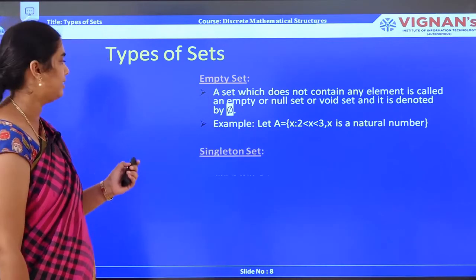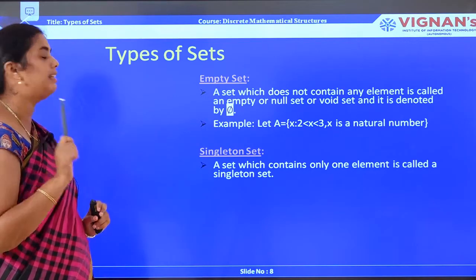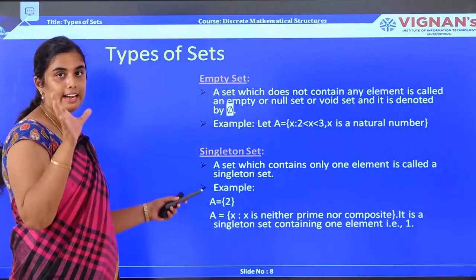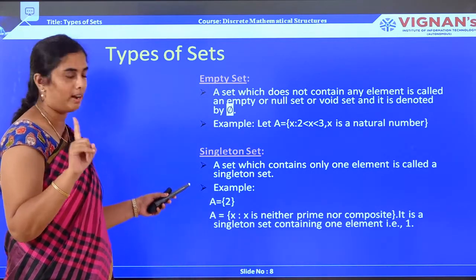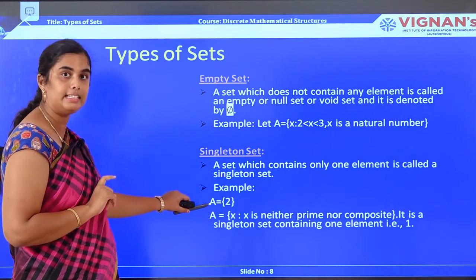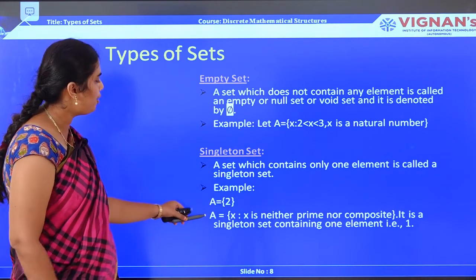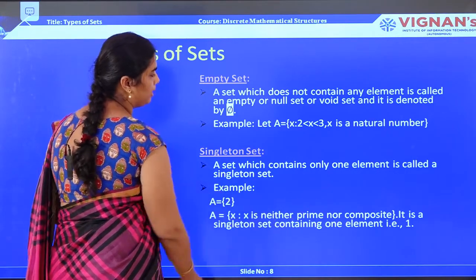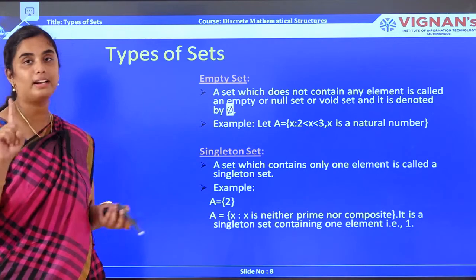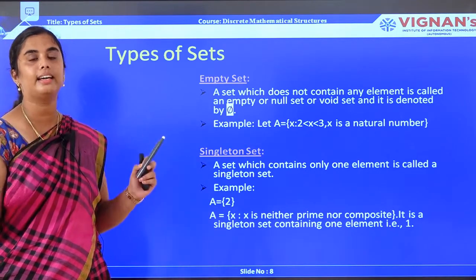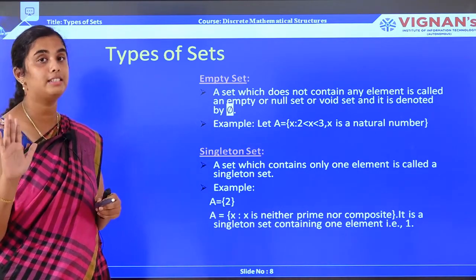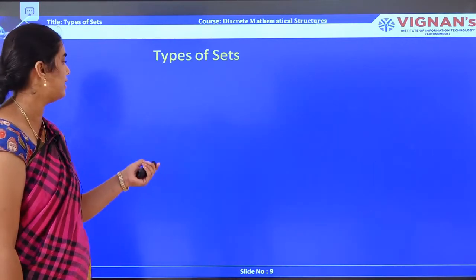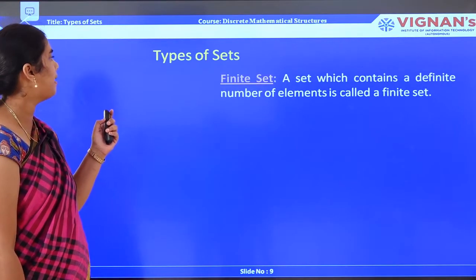Next, the singleton set. A set which contains only one element is called a singleton set. For example, A = {2} is a singleton set. Similarly, A = {x : x is neither prime nor composite} is a singleton set because 1 is the only number in the entire number system that is neither prime nor composite.